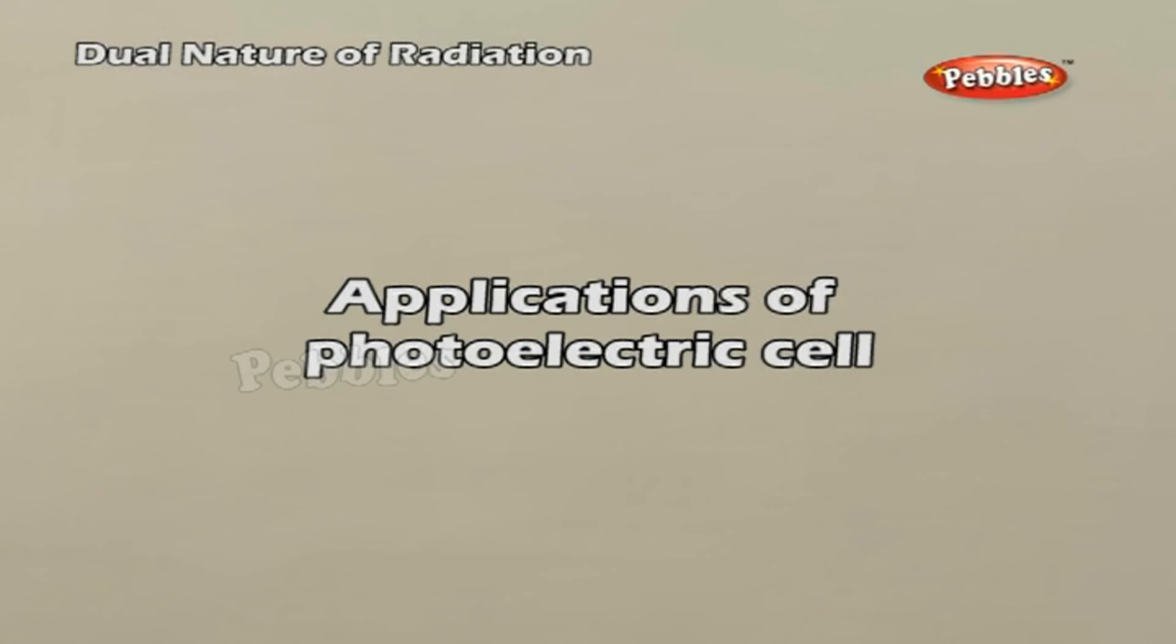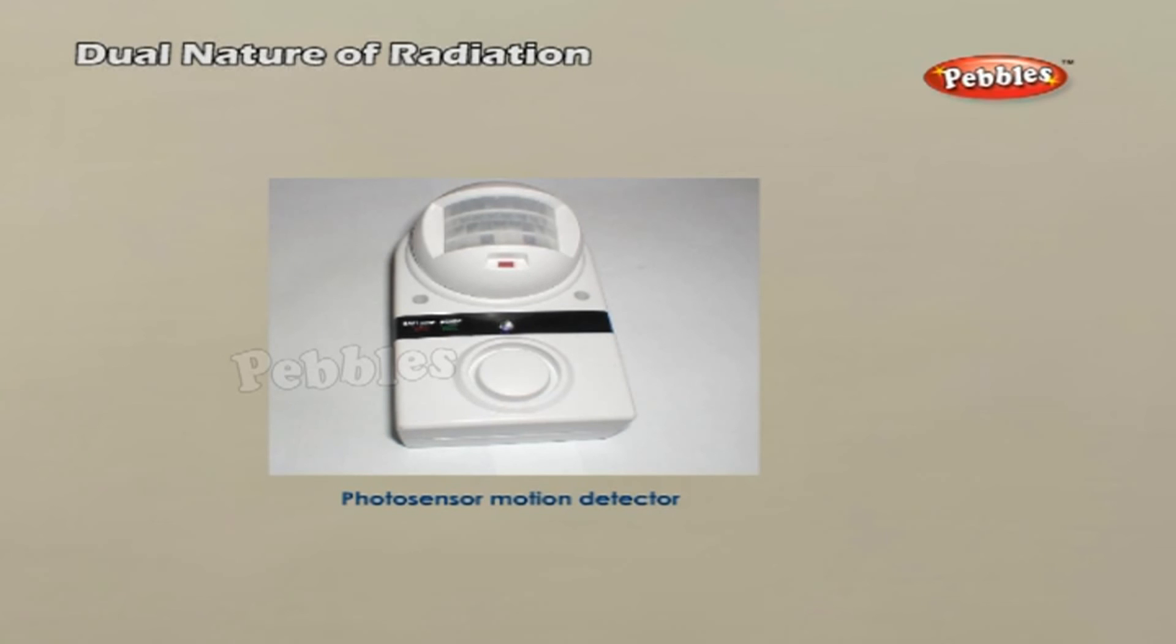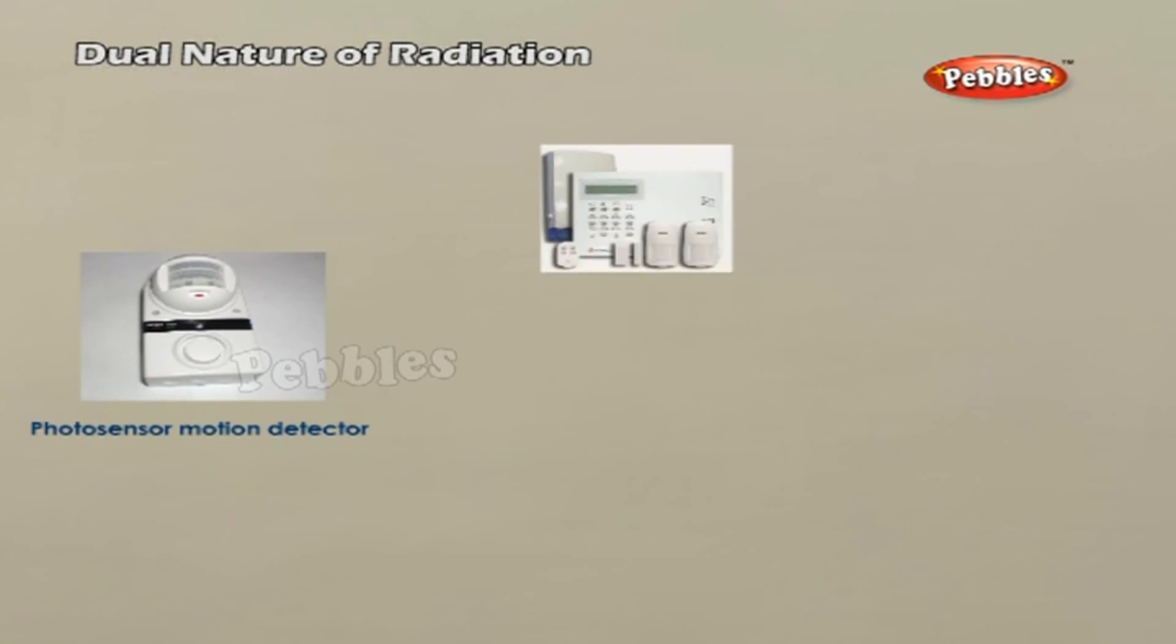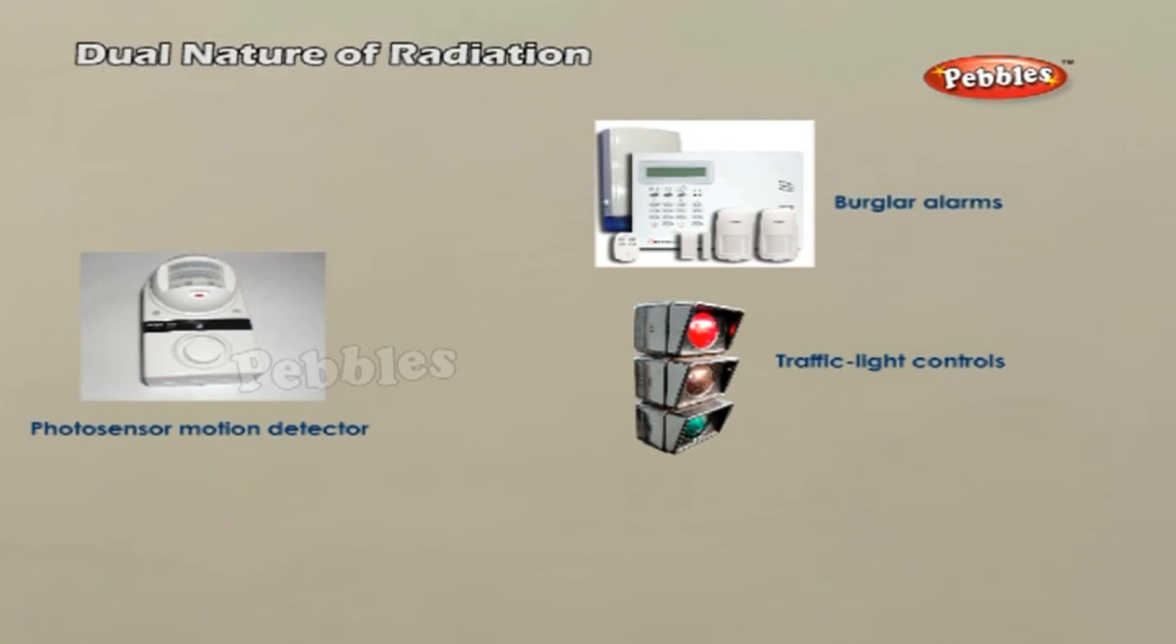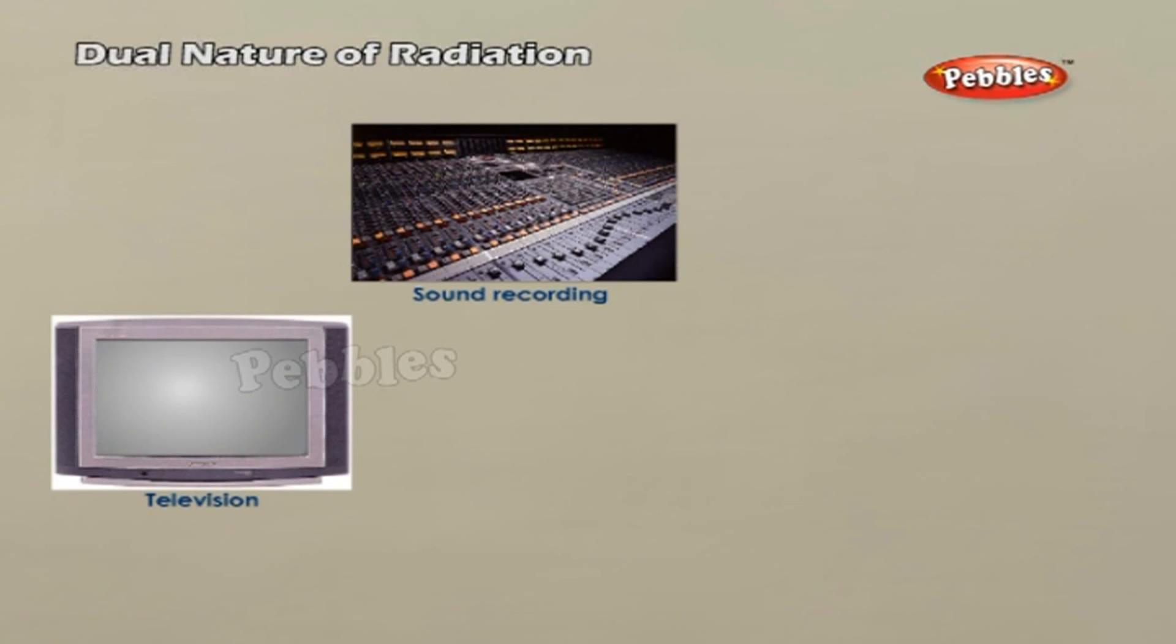Applications of photoelectric cell. Photoelectric cell, popularly known as the electric eye, is employed in traffic light controls and automatic door openers. Various types of photo tubes are used in sound recording, television and scintillating counters.